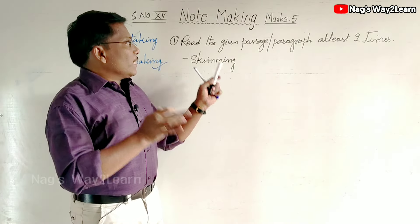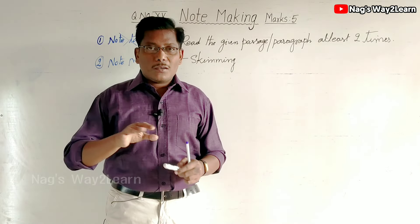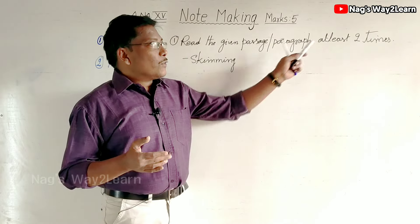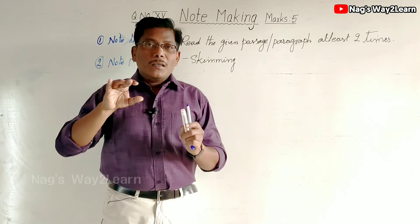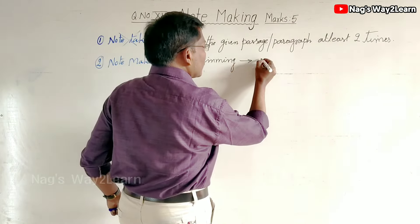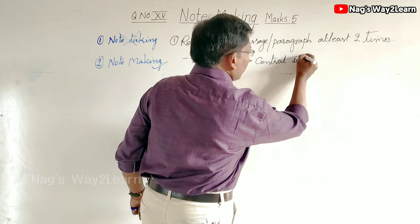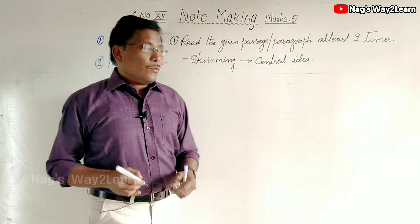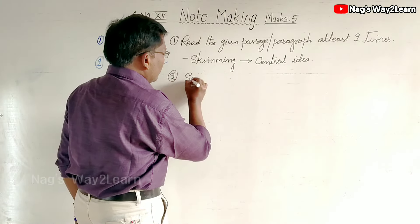So, first read the given paragraph at least two times to get the central idea or theme. If you don't understand even after two readings, the third time you use the technique of skimming — just go through the paragraph on the surface without going into detail — and you will definitely get the central idea of the passage. After getting the central idea, the next step is to do scanning.